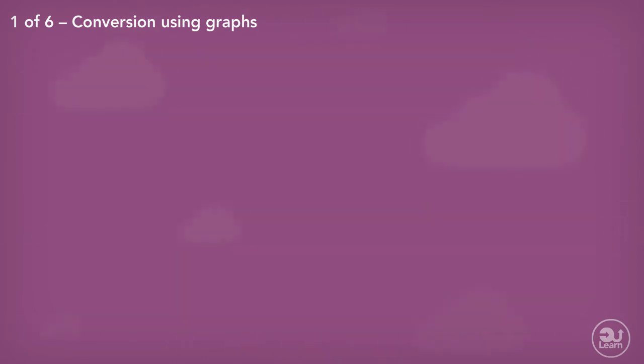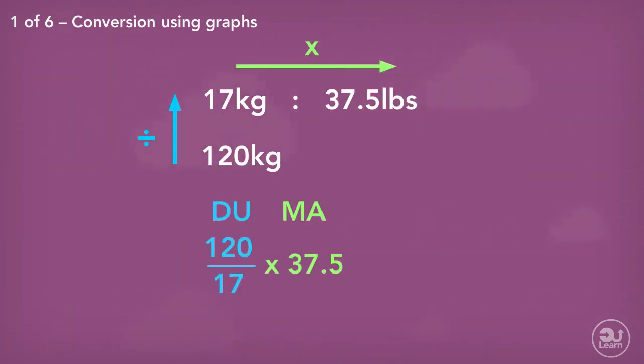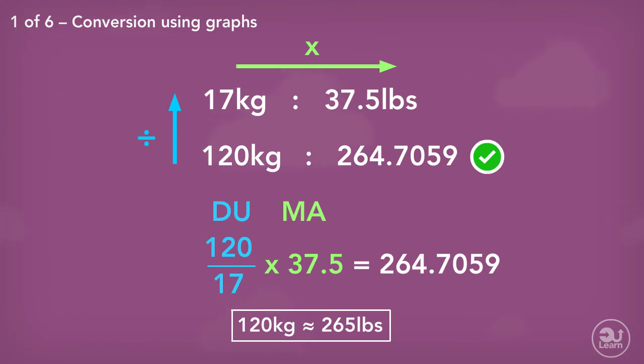We set up our ratios again, then divide up and multiply across. 120 divided by 17 times by 37.5 equals 264.7059, which is incredibly close to 264.